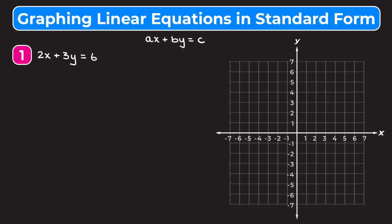In this video we're learning how to graph linear equations that are written in standard form. At the top of the screen we can see standard form, which is ax plus by is equal to c. For the first two examples I'm going to show you how we can graph equations written in standard form using x and y intercepts, and then for the last two examples I'll show you how we can convert standard form into y equals mx plus b and then graph the equation that way.